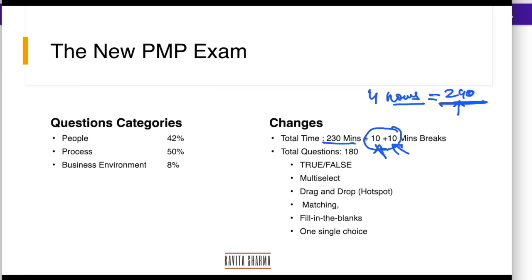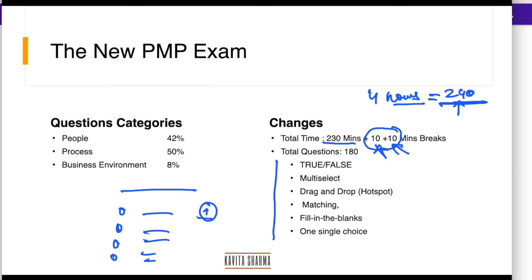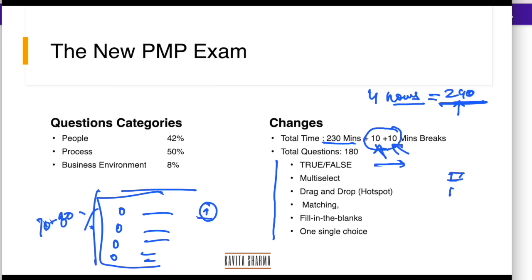You can schedule your break at a logical point of time. Question types have changed. Previously we used to have only a question and then 4 single choices — only one choice was correct, radio buttons. Now there are different types of questions. About 70 to 80% of questions would still be this type — 4 choices, one answer. But there are also true/false questions and multi-select questions with checkboxes where you can select 2 or 3. PMI writes 'select 2' or 'select 3' in those questions.